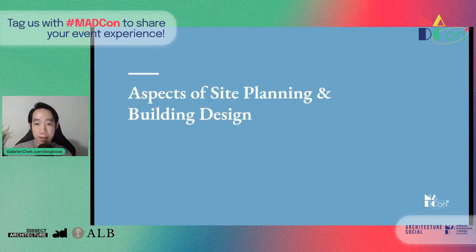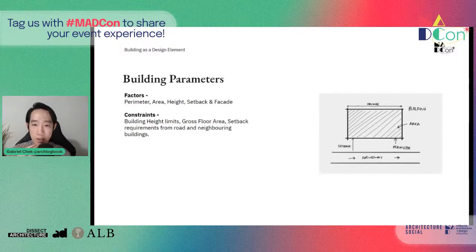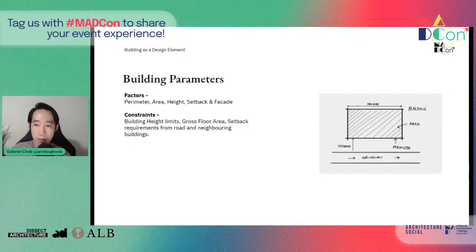Jumping into the aspects of site planning and building design. Firstly, we have the building parameters — the perimeter, area, height, setback, and facade. Some of the constraints that might be considered at this point, especially for site planning, is the building height limit, the gross floor area, and the setback requirements from the road and other buildings.